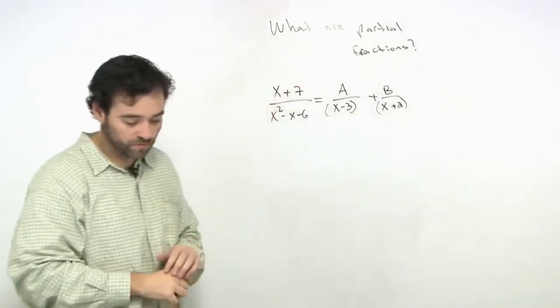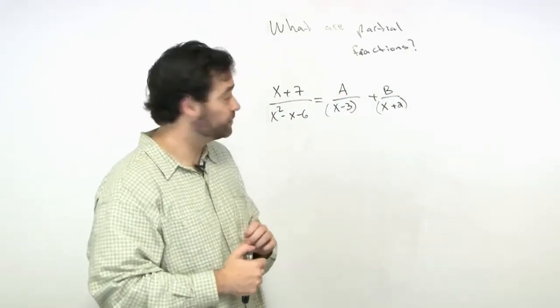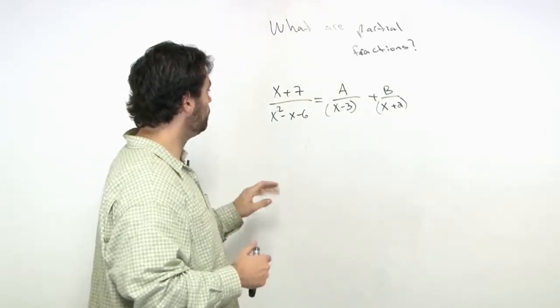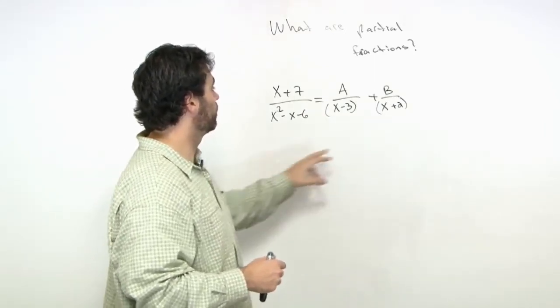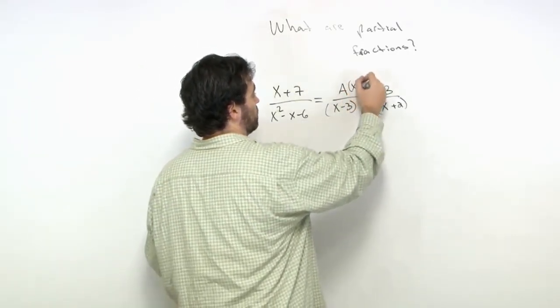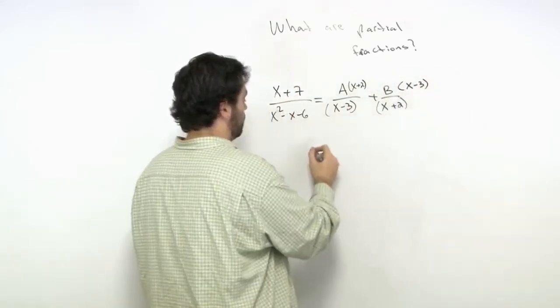There's our partial fraction. We want to solve for A and B. To combine these fractions into one, multiply the first by (x+2) and the second by (x-3).